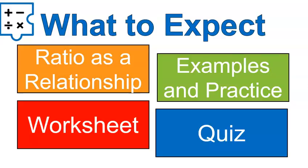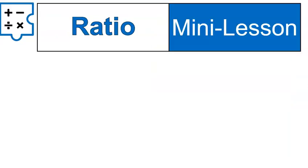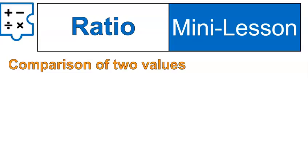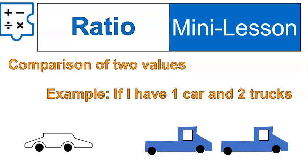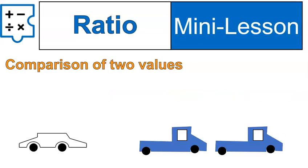Let's get into today's mini lesson. A ratio is a comparison of two values. For example, if I have one car and two trucks, like you see here, then I can compare them. Watch how I can compare them.